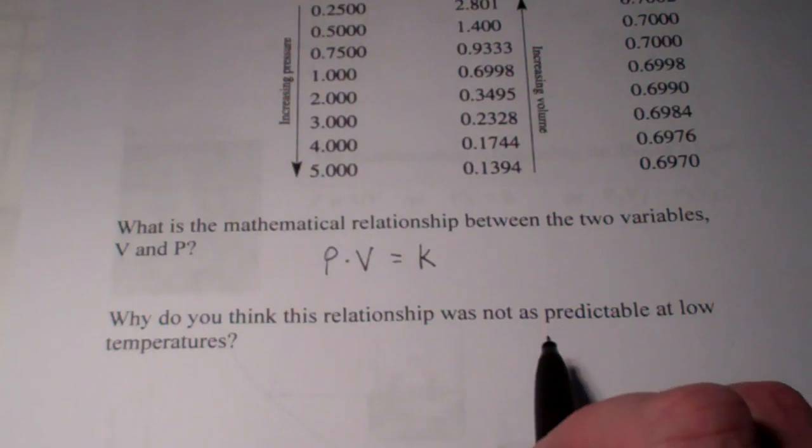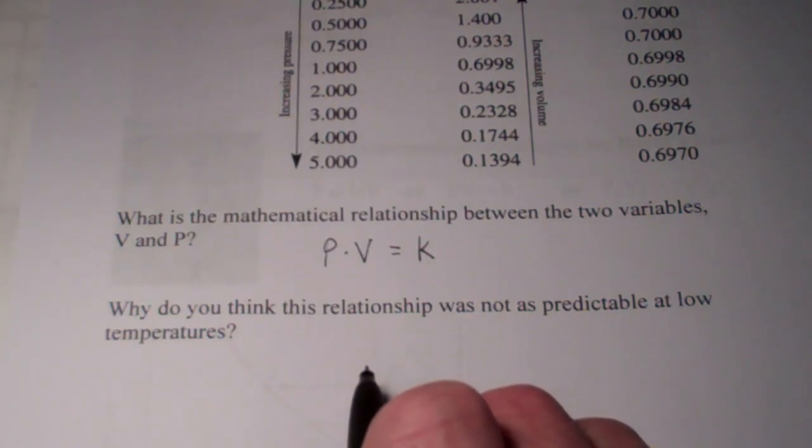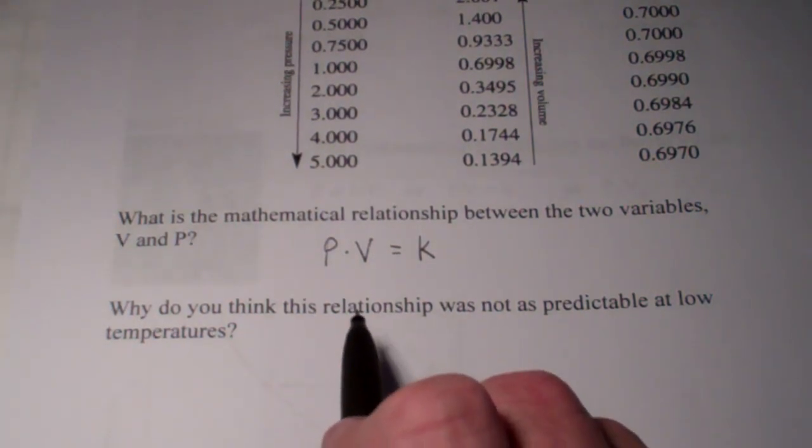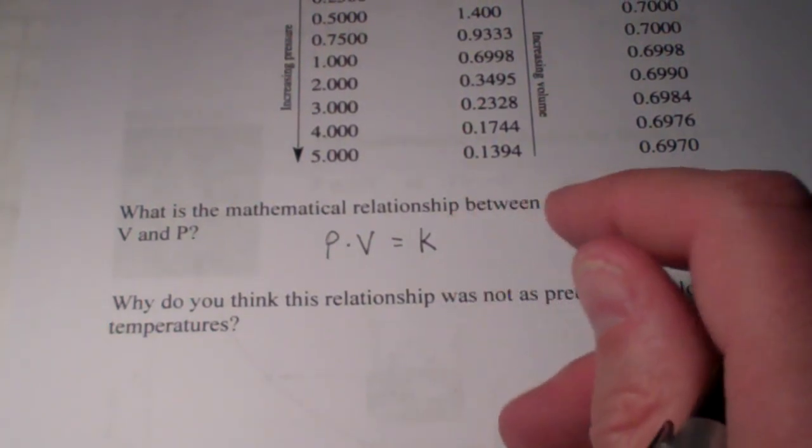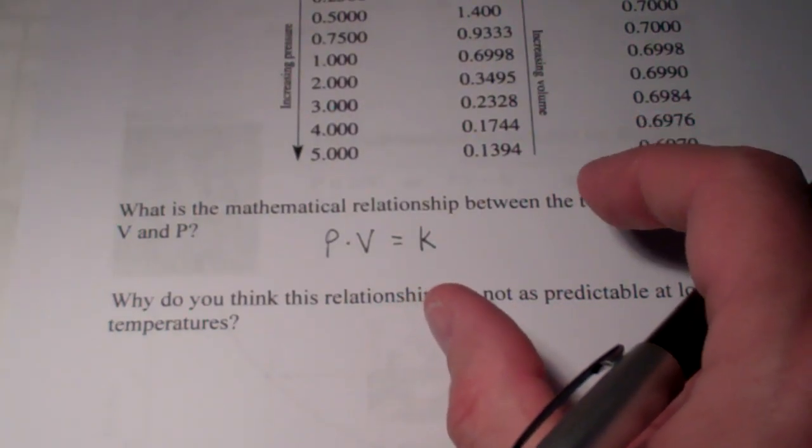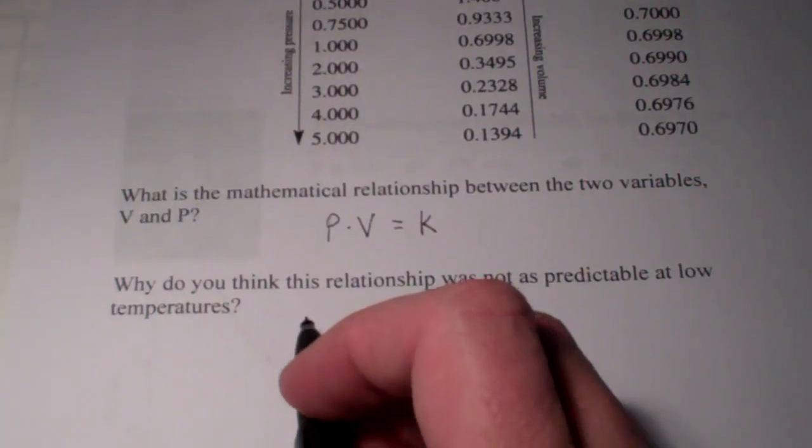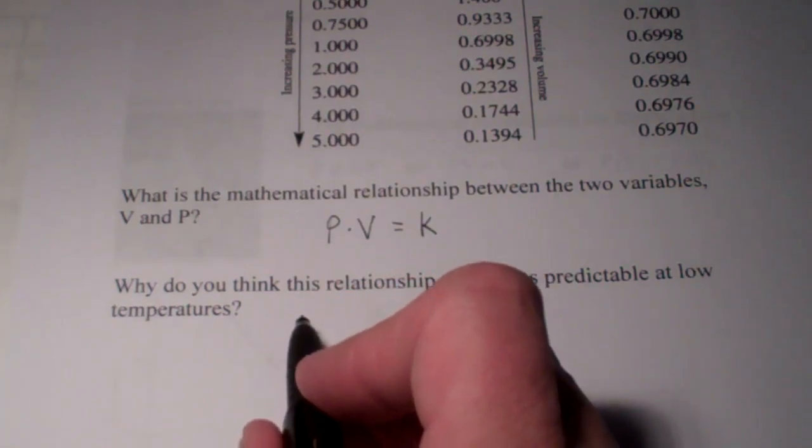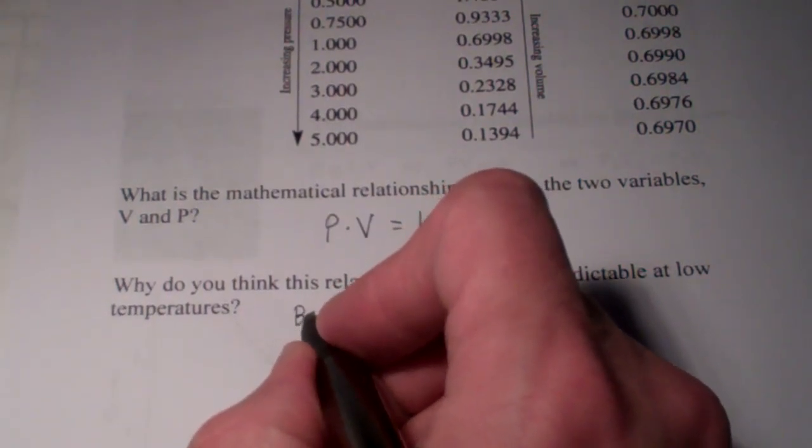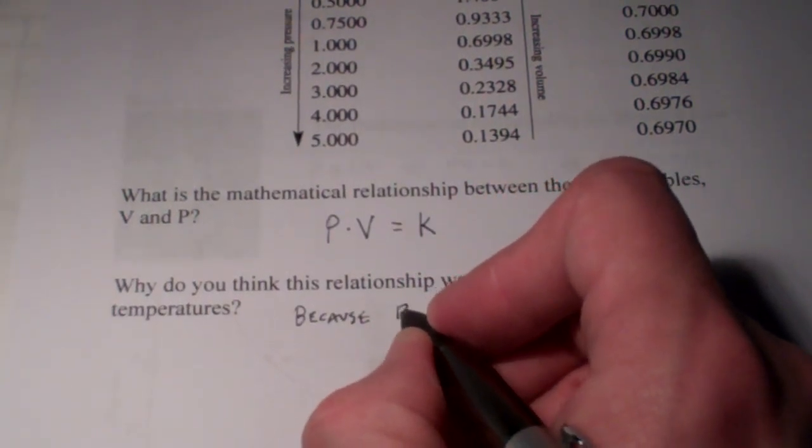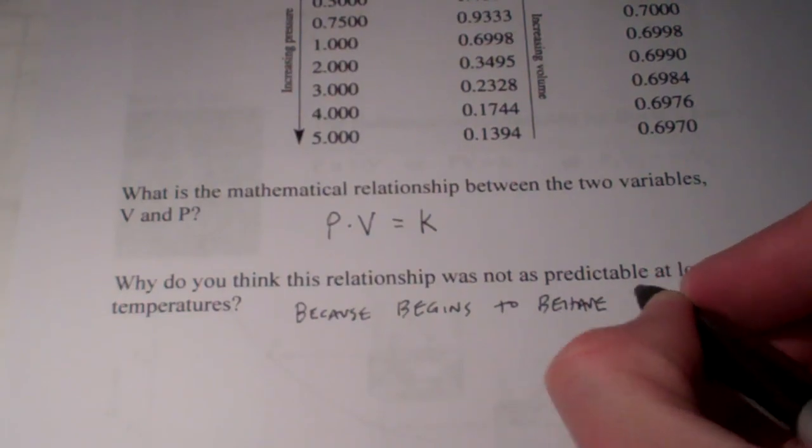Now, when we start getting to very high pressures and very low temperatures, the relationship is not quite as predictable. And the reason for that is, think about it, what happens at high pressures to a gas and low temperatures? The gas particles start losing kinetic energy. High pressures, we start pushing them together. They start becoming attracted to one another. And they begin to take on liquid properties.